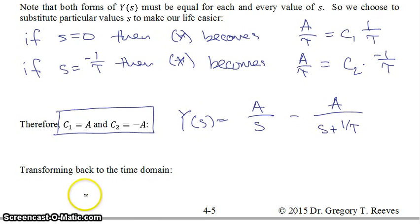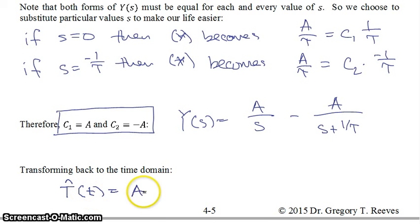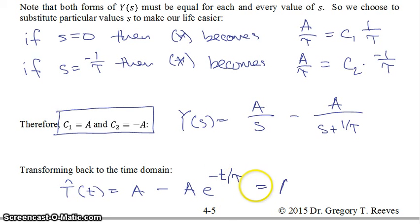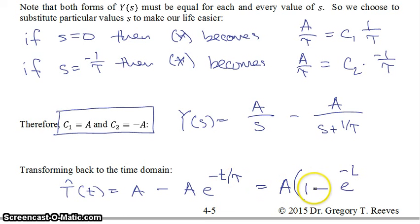We find that T-hat as a function of time equals A minus A times e to the minus t over tau, or equivalently A times the quantity (1 minus e to the negative t over tau).